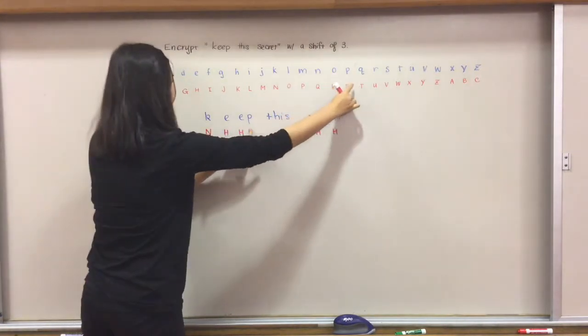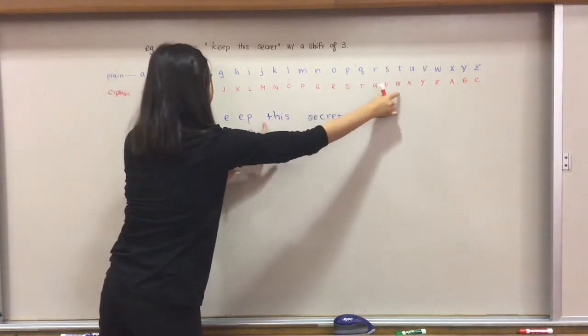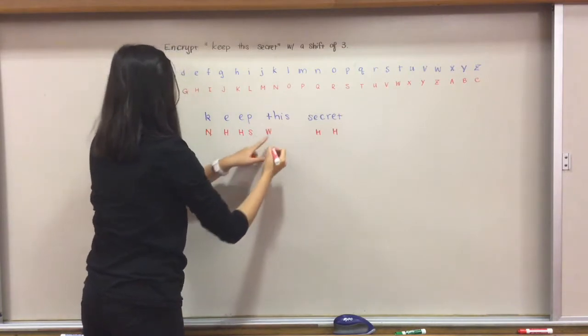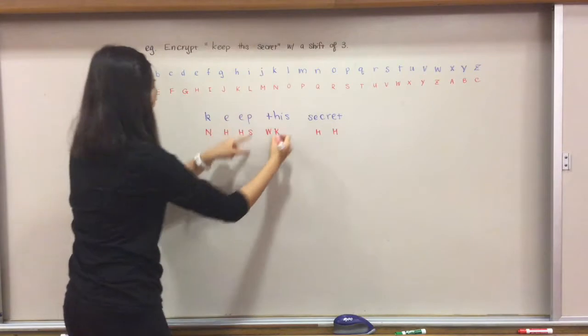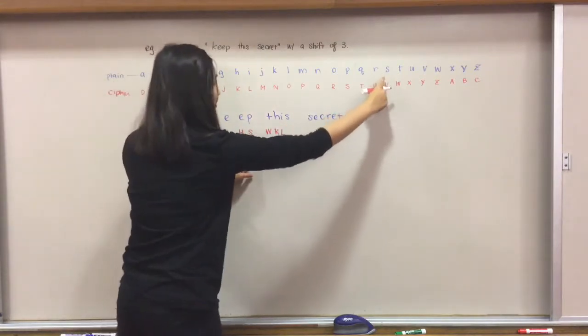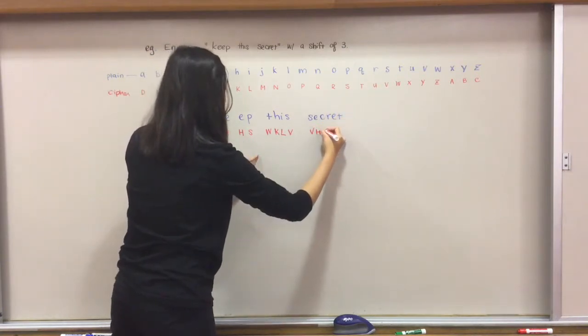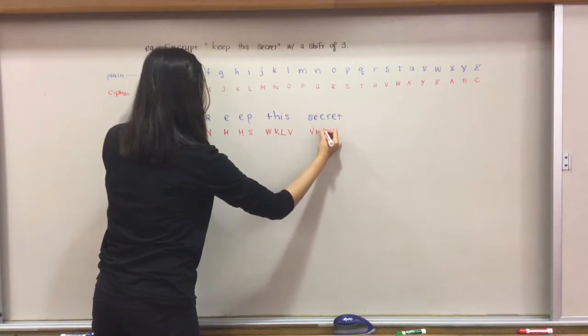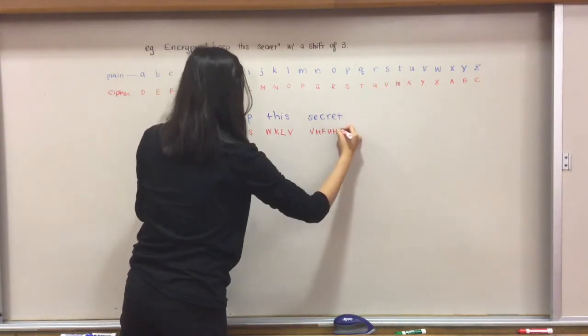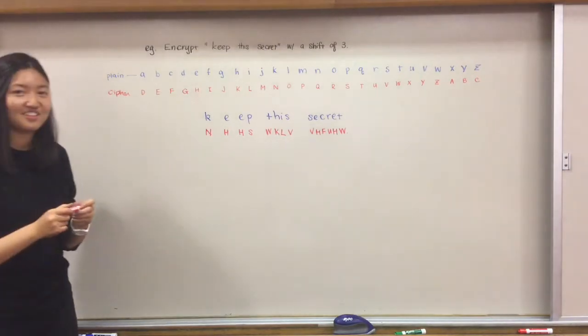And then for p, p maps onto s, so we're going to write s here. T maps onto w, so that's a w, h goes to k, i goes to l, s goes to v, same here, and then r goes to u, c goes to f, and then t goes onto w again. And there, that's how you encrypt with Caesar cipher.